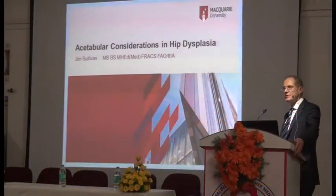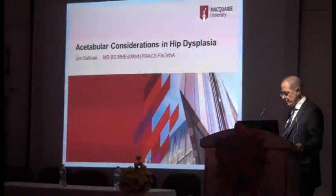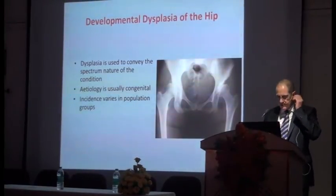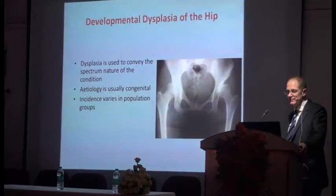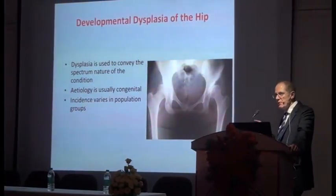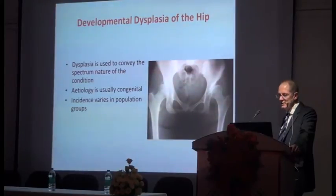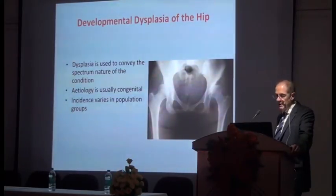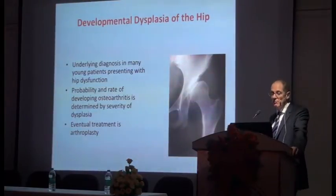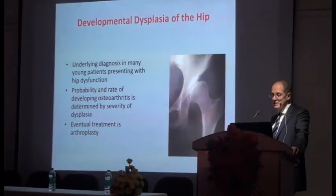I was going to talk about DDH, particularly the acetabular side. It's been an interest of mine for many years. Developmental dysplasia is a term to convey a spectrum of disease. The etiology is congenital and it varies in different population groups. We have a broad population mix in Australia, and the rim of the Mediterranean — particularly Turkish, Greek — have a high incidence, as do some North African communities, and it's fairly common in China and India as well. The underlying diagnosis in many patients presenting with osteoarthritis early is developmental dysplasia. The probability and rate of developing osteoarthritis is determined by the degree of dysplasia, and in the end the treatment is arthroplasty.